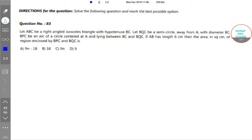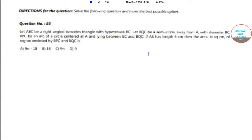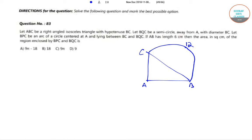Let ABC be a right-angled isosceles triangle with hypotenuse BC. Let this be the triangle ABC. Let BQC be a semicircle away from A with diameter BC. Let this be a semicircle where this is Q. Let BPC be an arc of a circle centered at A lying between BC and BQC. So let this be an arc on the circle. If AB has length 6 cm, this is 6 cm,